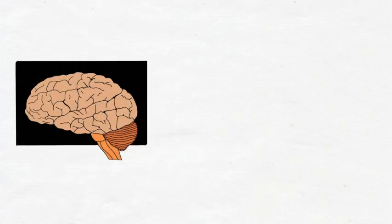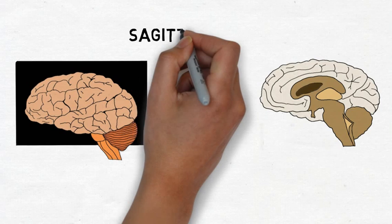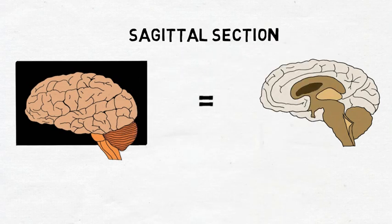The brain can also be examined on three different planes, and these planes are used to describe ways the brain is often sliced into sections for examination. A sagittal section is seen when a slice down the middle of the brain divides the brain into two separate halves.